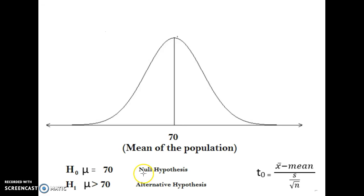You always have a null hypothesis when you do a hypothesis test. It always has an equal sign in it. And for this example, we're saying our null hypothesis is that the mean of the population is 70 inches tall. Your alternative hypothesis never has an equal sign — it either has a greater than, a less than, or a not equal to sign.